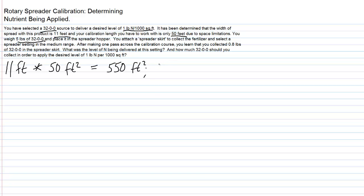Now we know that we have applied, or in this case collected, 0.8 pounds of 32-0-0. Now we're going to put our knowledge of how to work with the analysis of the nitrogen. 0.8 pounds of 32-0-0, we take 0.8 times 0.32, the nitrogen analysis.